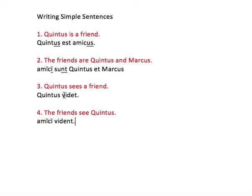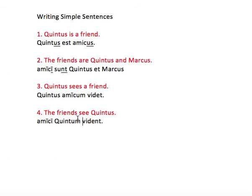Let's go back to the other part of this. Quintus sees a friend. Look — up here it was Quintus is a friend, and amicus is acting as the predicate nominative. Here, videt is an action verb, and so we're going to put amicum as the accusative because it's the direct object of this action verb. Same thing over here — Quintum. That's the thing that they see.